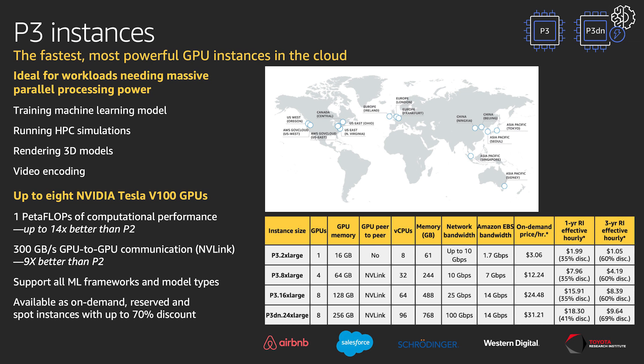Customers like Toyota Research have been able to reduce their ML model training times from days to hours, enabling ML engineers to iterate faster, train more models, and increase accuracy in their pursuit of building safer, more accessible mobility.